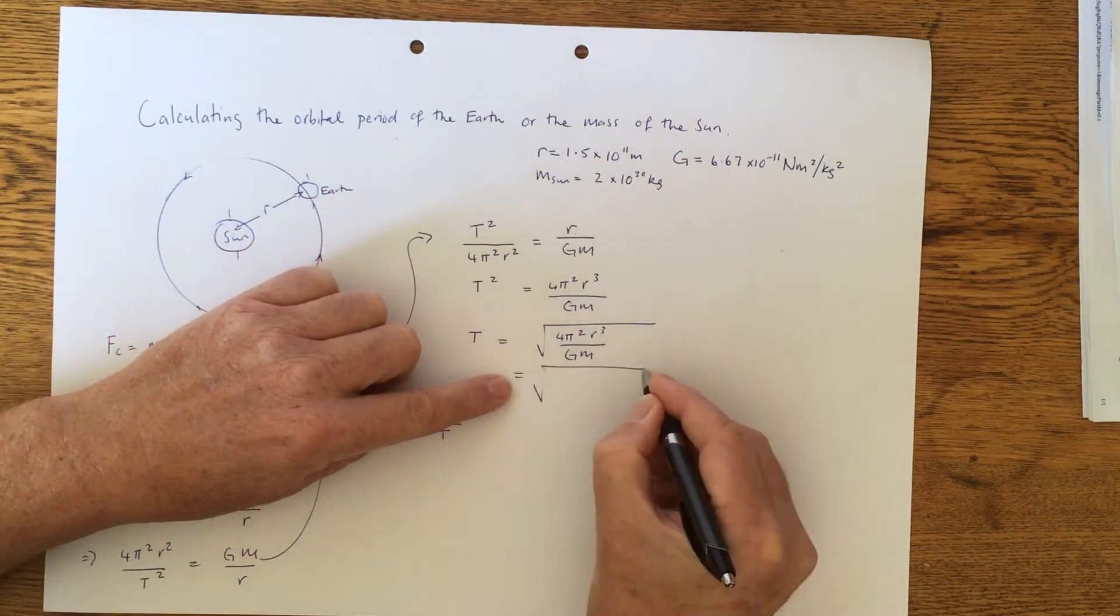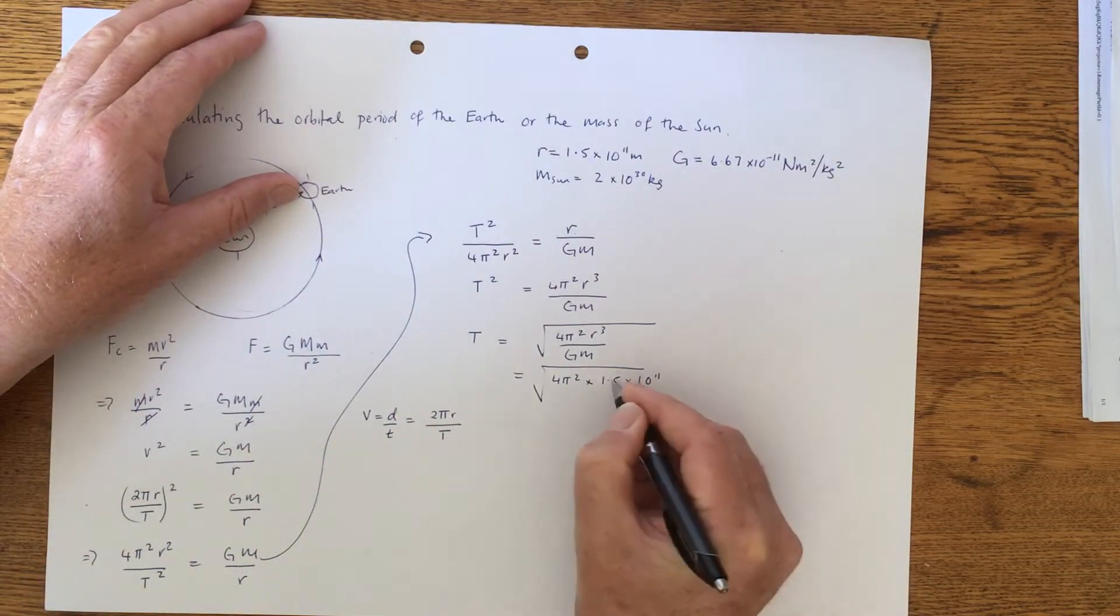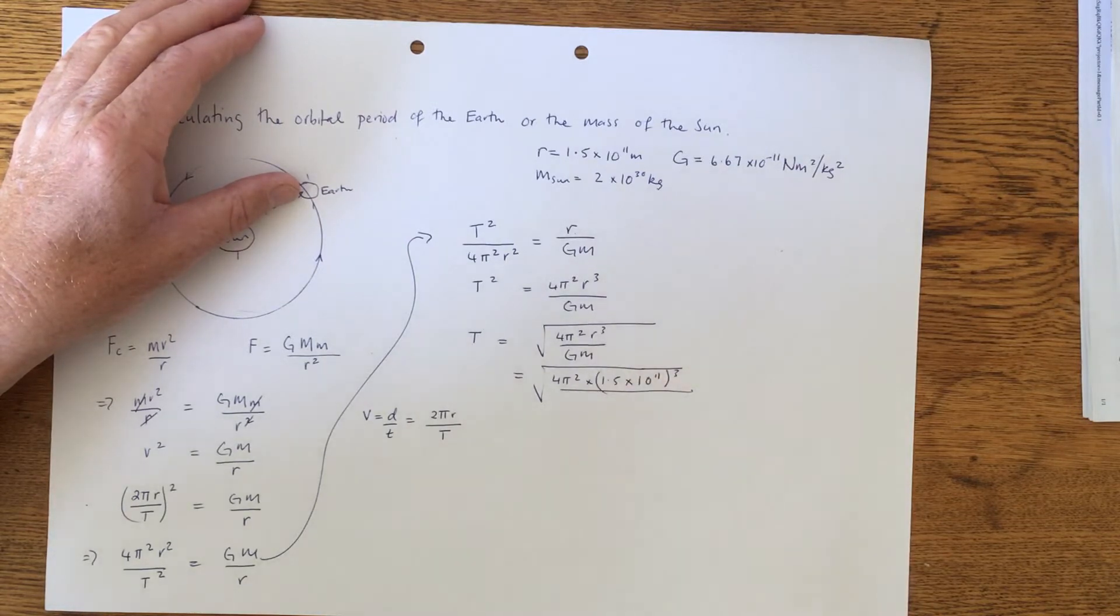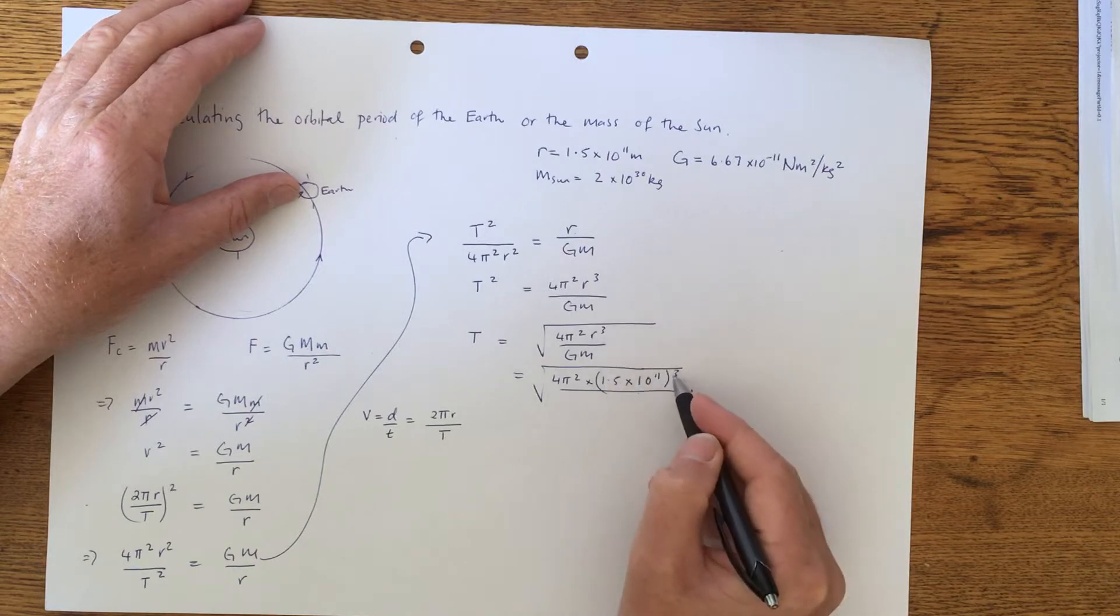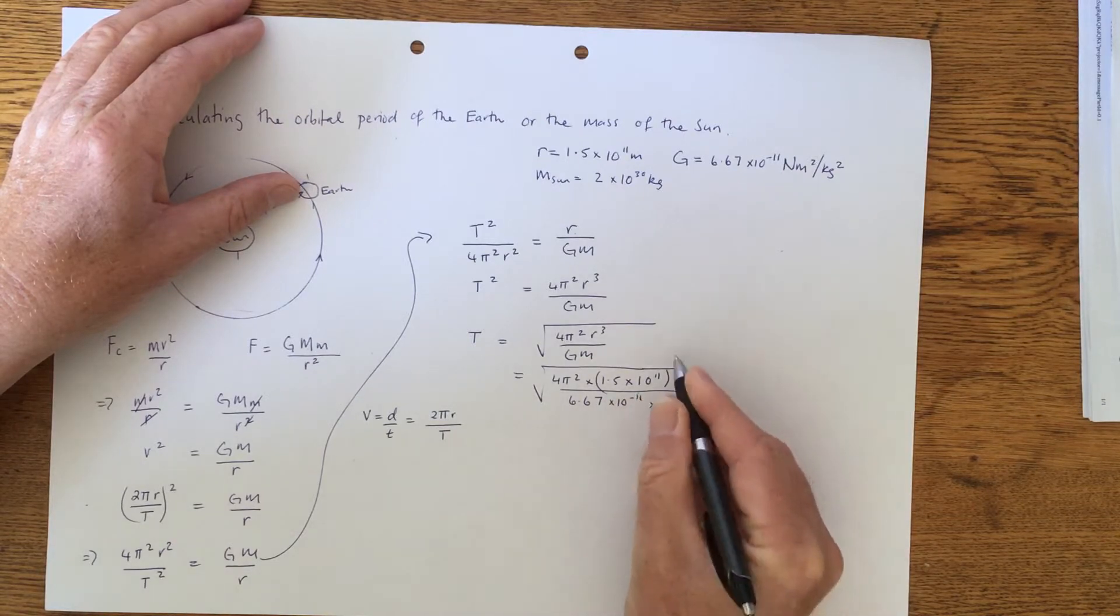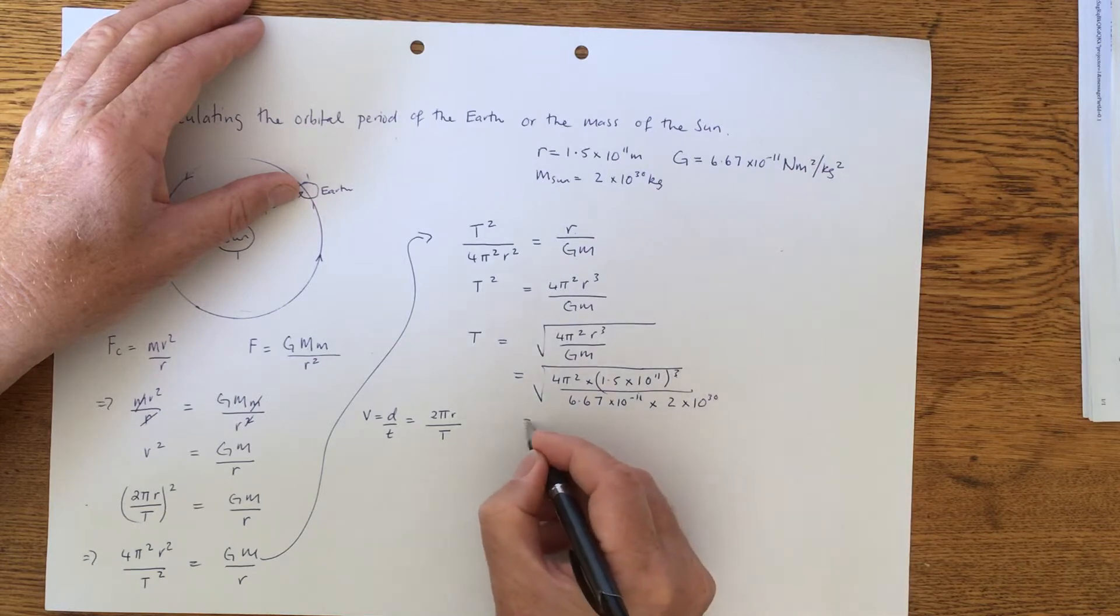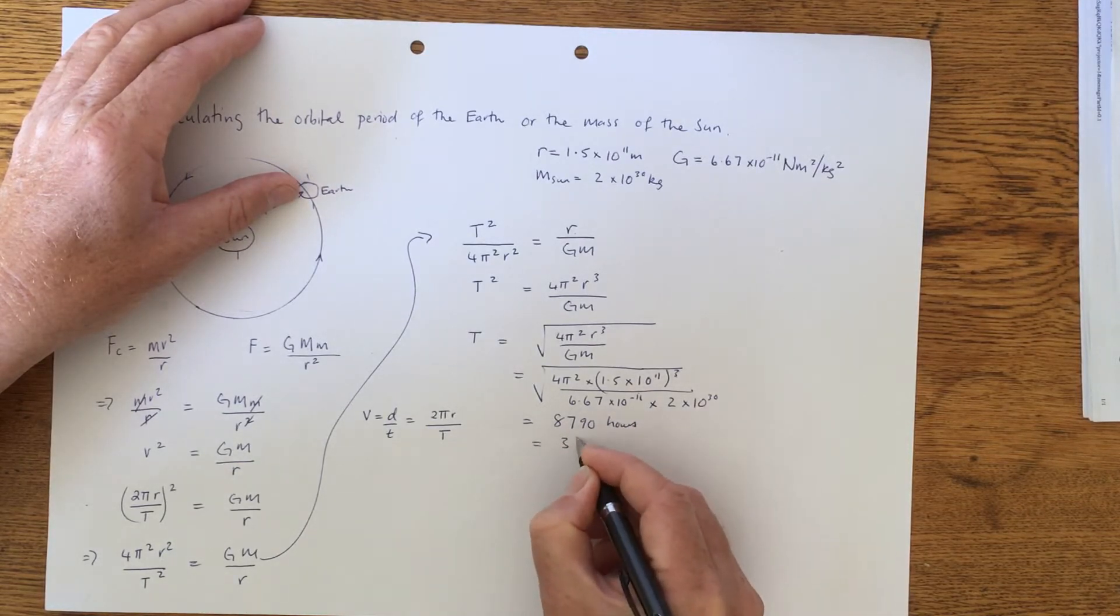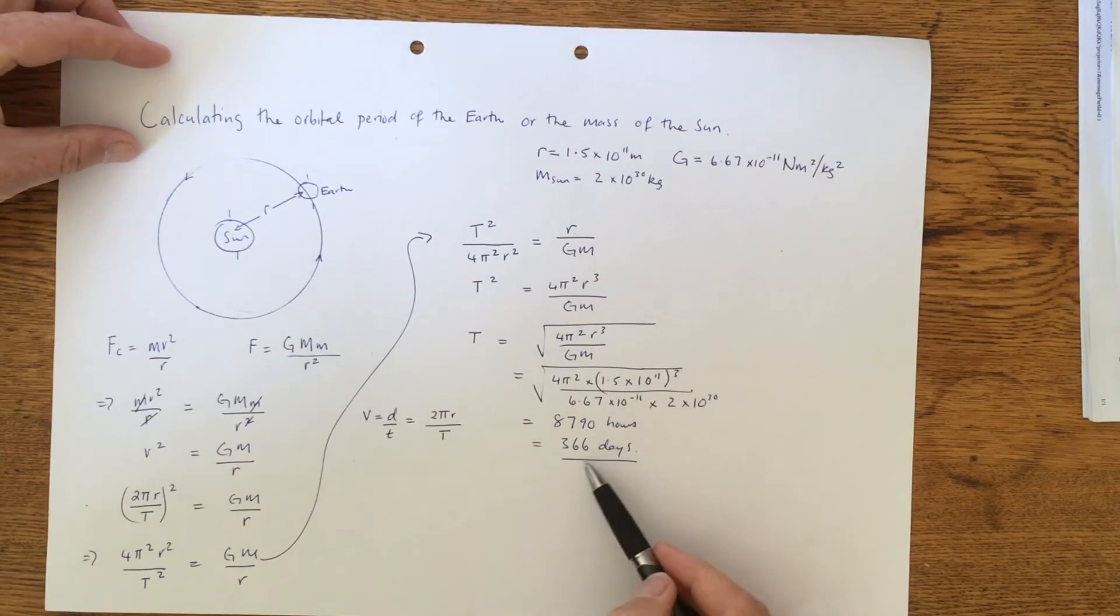So let's pop those numbers in. So 4π² times 1.5 times 10 to the 11 metres. And we have to cube all of that. So this is where it's so easy to make a mistake. It's very easy to leave off the square off the π. And also people forget that this radius is cubed now. Divided by the universal constant, 6.67 times 10 to the negative 11, times the mass of the Sun, 2 times 10 to the power of 30 kilograms. And I think that all works out to be about 8,790 hours. And that's around about 366 days. So that's about right. So that's calculating the orbital period of the Earth, which is one year, basically.